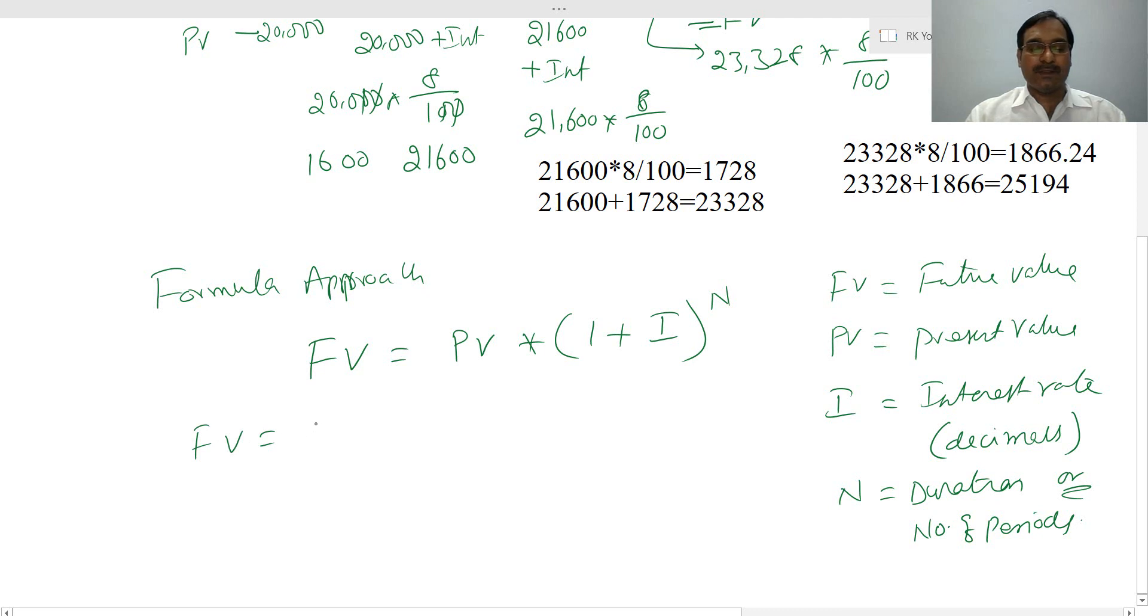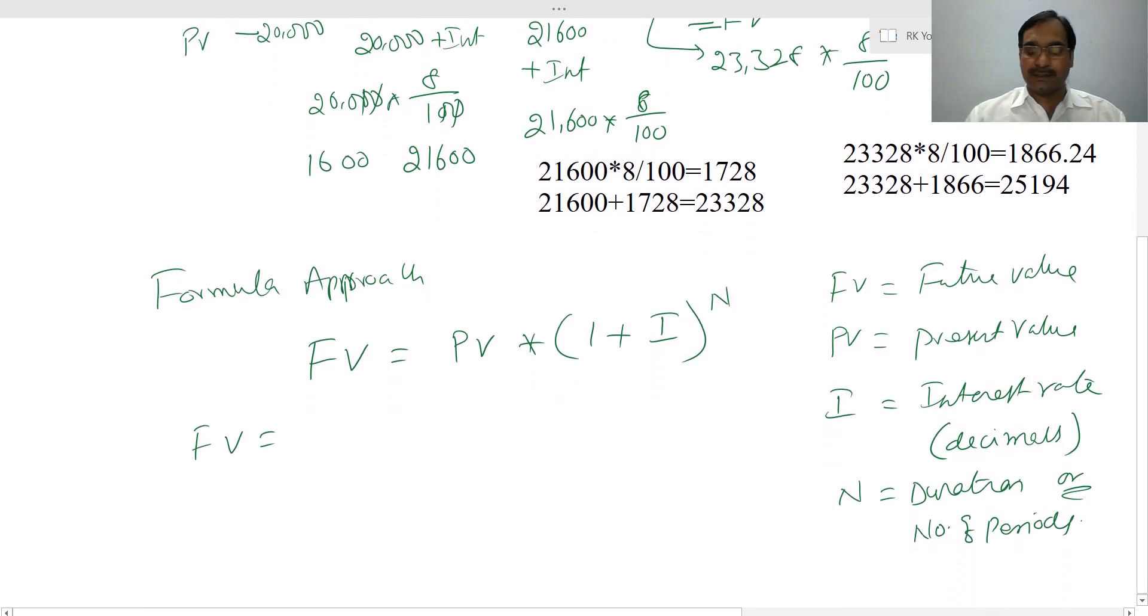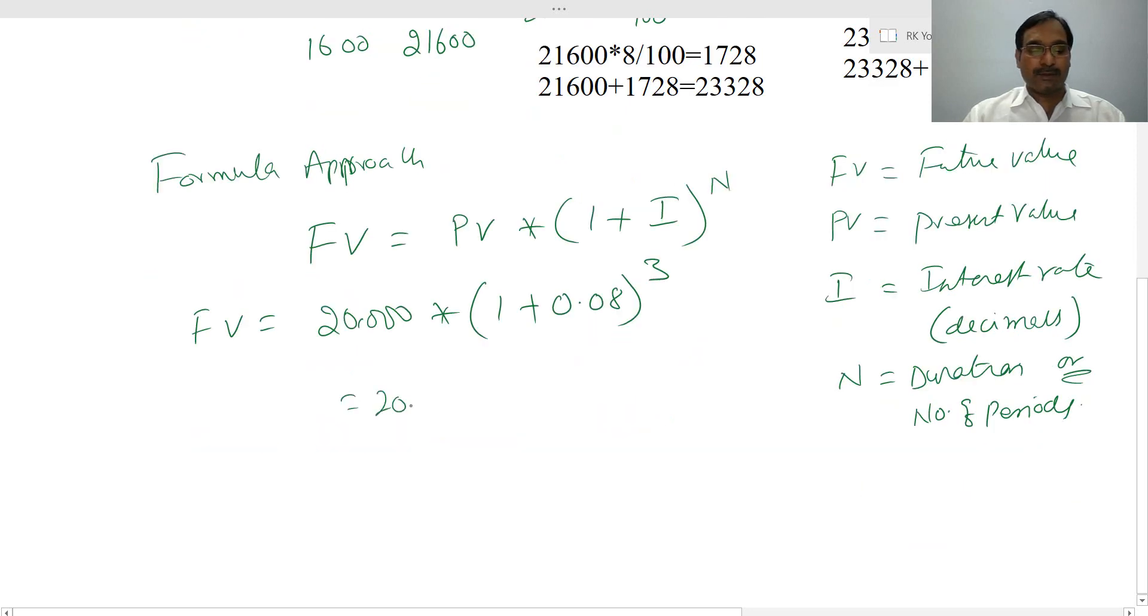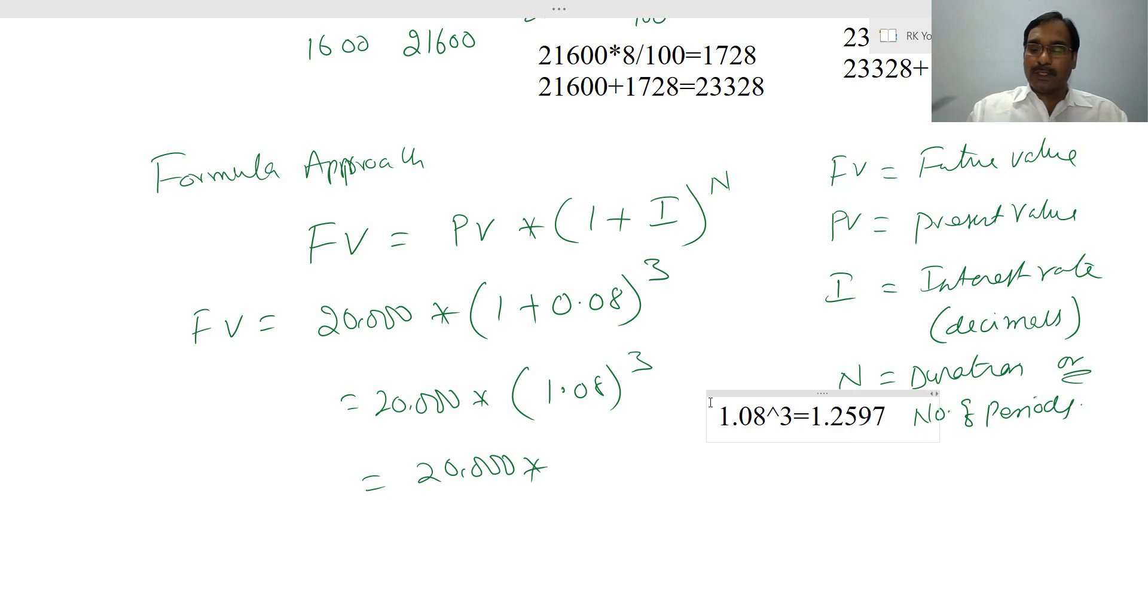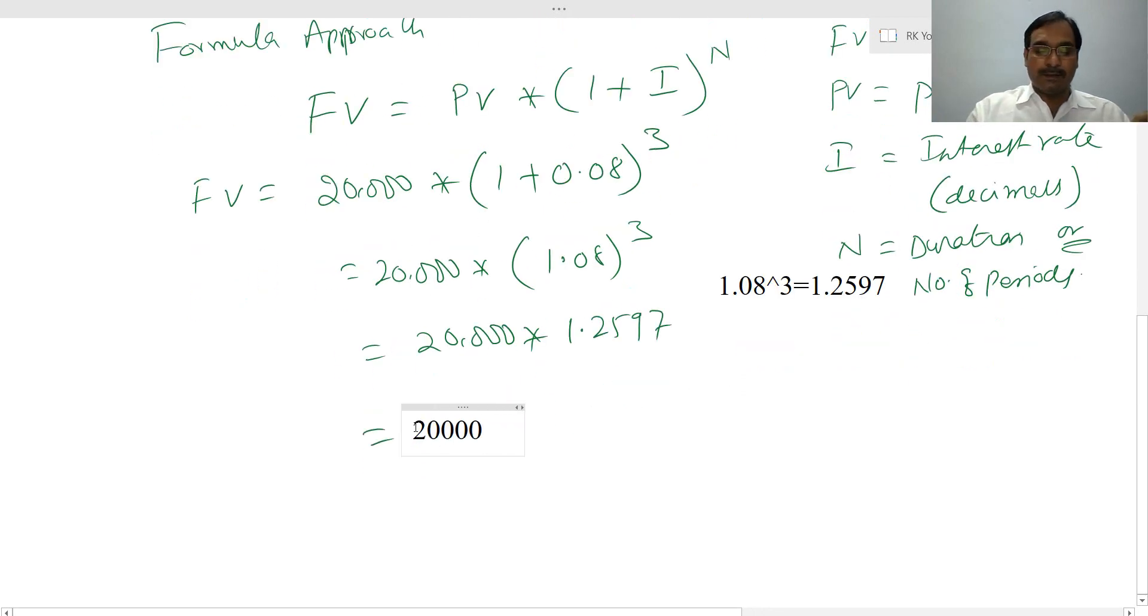Your future value equals present value, the amount that you invested, that is 20,000, times (1 plus i). Interest rate is 8%, so 8% is 0.08, and duration is 3 years. This equals 20,000 into 1.08 to the power of 3. This is 1.2597. So this equals 20,000 into 1.2597, which is 25,194 as your future value.